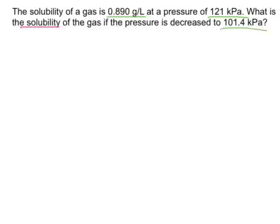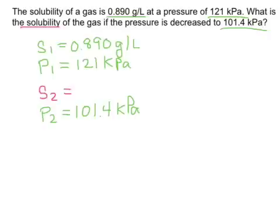With any word problem that I solve, I like to underline the given information in green, and what the question is asking for in red. Then I like to list the data with the correct symbol. I'm going to leave a question mark for S2. That's representing the new solubility of the gas.